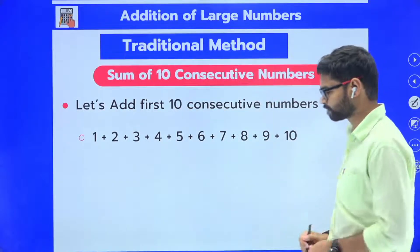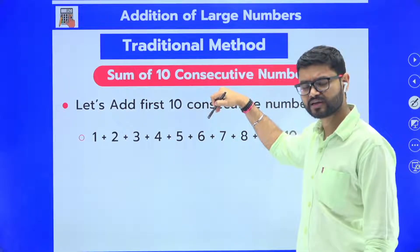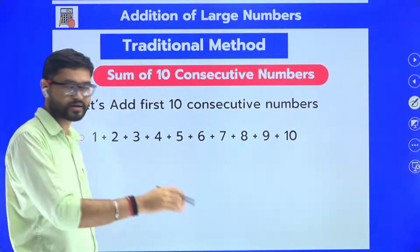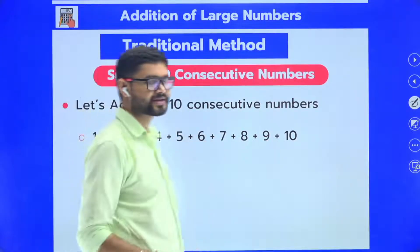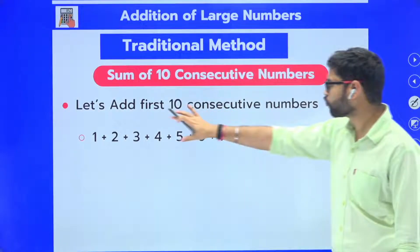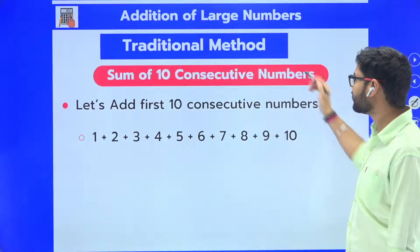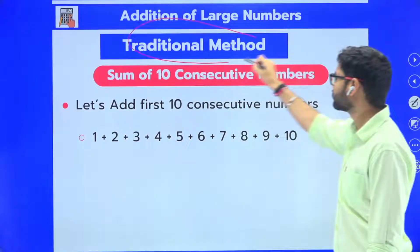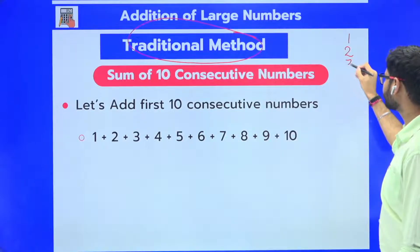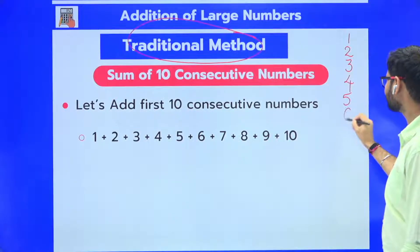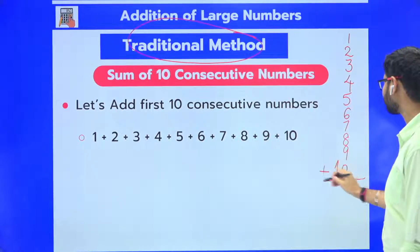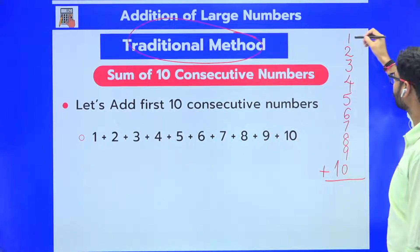Let's add the first ten consecutive numbers. You understand what consecutive numbers are — numbers that come right after each other with no break: 1, 2, 3, 4, 5, 6, 7, 8, 9, 10. If I want to add all these ten consecutive numbers with the traditional method — the method you learn in school — I will write all ten numbers first and then start adding them.